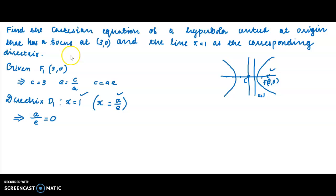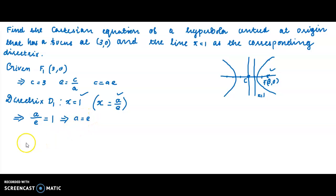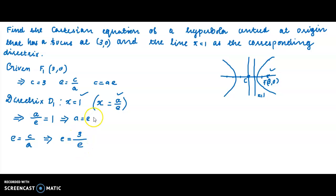From a/e = 1, we get a = e. Also, eccentricity e = c/a = 3/a. Since a = e, we have e = 3/a, so e·a = 3, meaning e² = 3, and therefore e = √3. This is the eccentricity of the hyperbola.